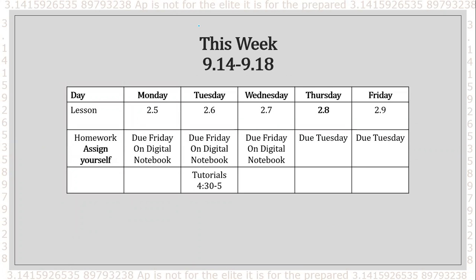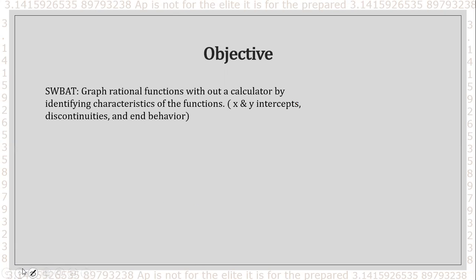Looking ahead at this week — it's Monday the 14th — we'll be learning how to graph rational functions today, tomorrow, and Wednesday. We're slowly going to build up to our slanted asymptotes. Our objective is to graph rational functions and find their characteristics: x and y-intercepts, discontinuities like holes, vertical asymptotes, horizontal asymptotes, and eventually decide their end behavior.